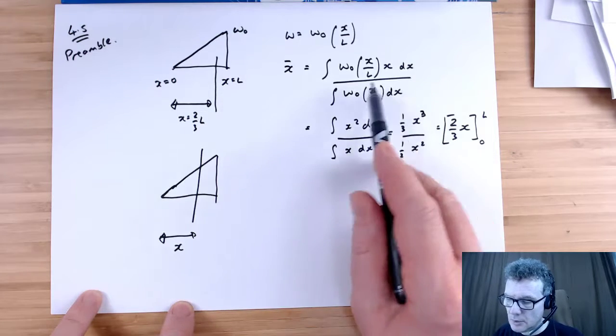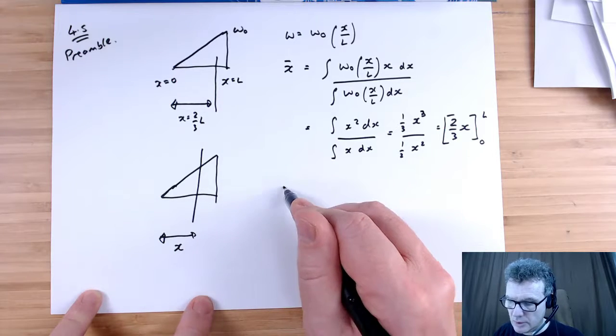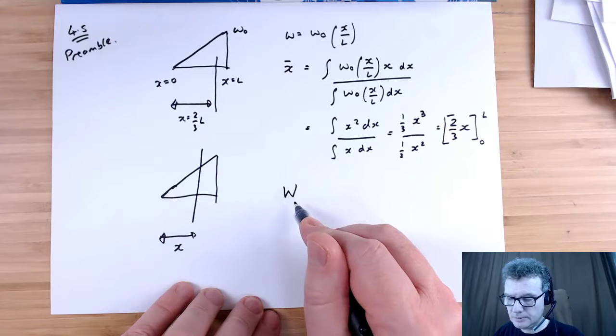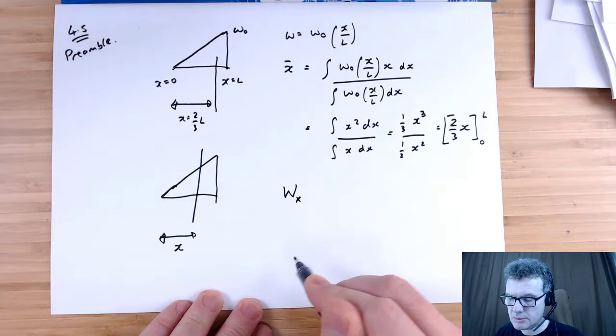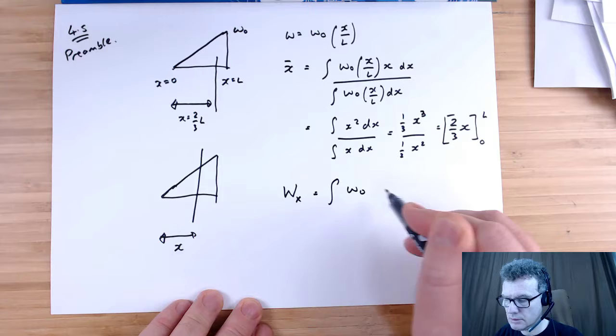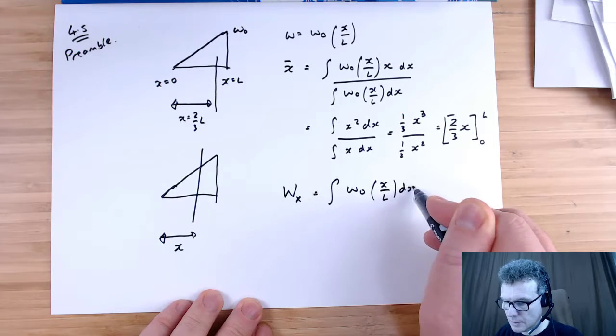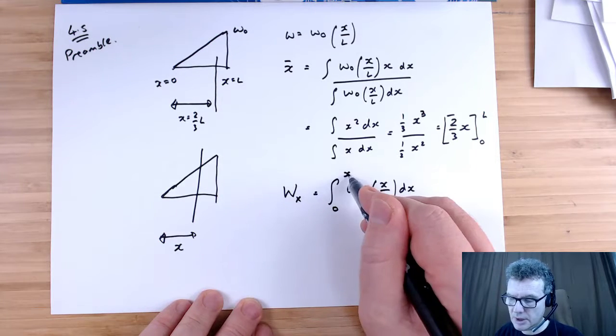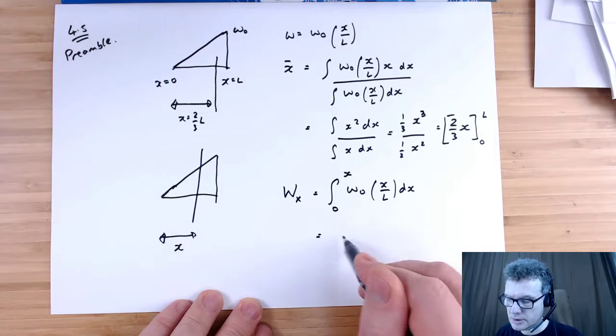To do that we want to be integrating the weight, so we'll call this big W, the weight left of x. W subscript x is the integral of my function with limits of 0 to x. That's constant, integrate the x becomes x squared over 2L.